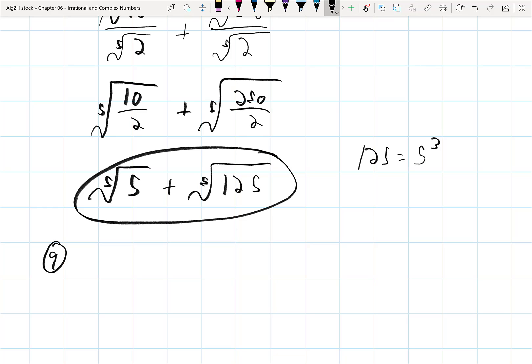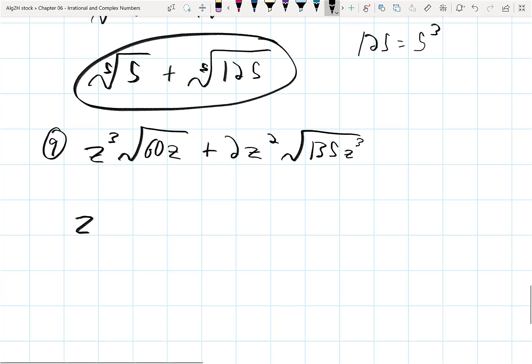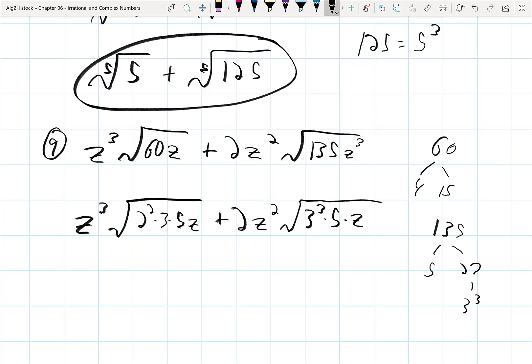You can have a problem like this with variables where I have z cubed root 60z plus 2z squared root 135z cubed. So if you really don't know what to do, start with a prime factorization of each of these numbers. 60's prime factorization, 60 breaks up into 4 and 15, so 4 is 2 squared, 15 is 3 and 5 and a z plus 2z squared. 135, let's break that up, 5 and 27, and 27 is 3 cubed. So this gives me 3 cubed times 5 times a z cubed. So that was just a first step of taking these whole numbers and factoring them so I know what's going on.